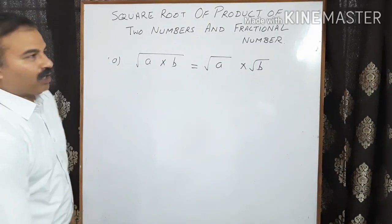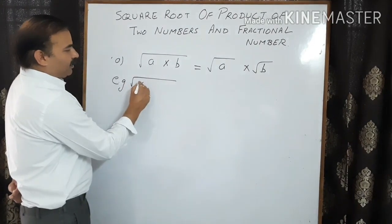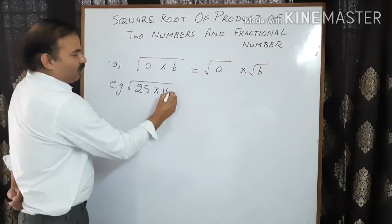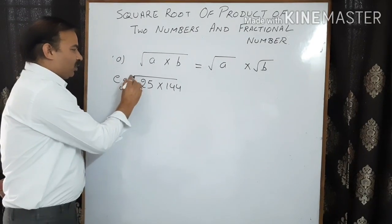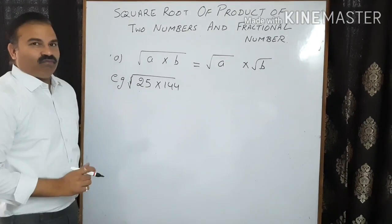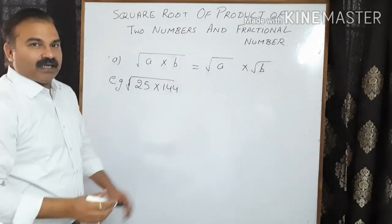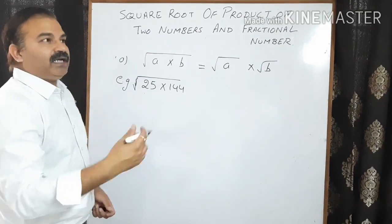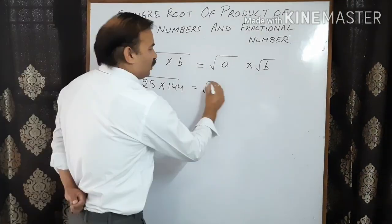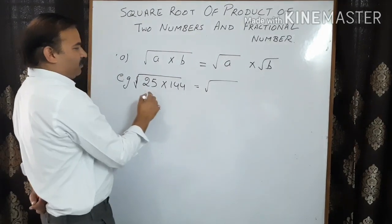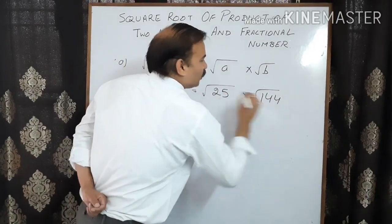Now let us take an example. We have the number 25 and another number 144. The question is to find the square root of the product, that is square root of 25 multiplied by 144. Please remember: do not multiply first, because the number will become bigger and it will be difficult to find the square root by long division or prime factorization. So this equals square root of 25 multiplied by square root of 144.